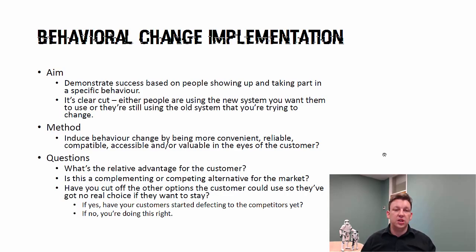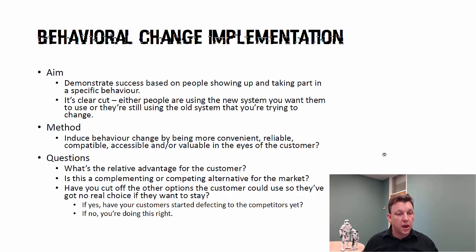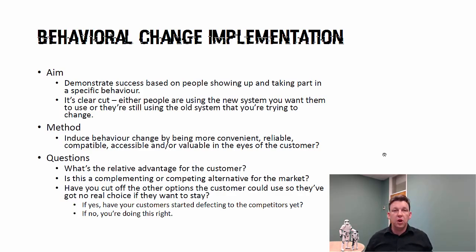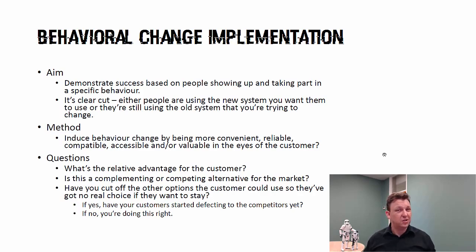The behavioral change implementation is metric experimentation. You're asking: are people doing a specific task you're asking of them? Are they using the new system or the old system? This is particularly useful around opt-in systems. But opt-out mechanisms — as Twitter, Facebook, and Tumblr use — are basically a cheat: people are using the new system because you forced them to. That's not a behavioral change goal, that's just bad business.